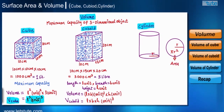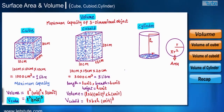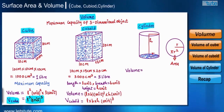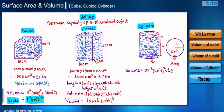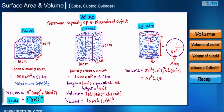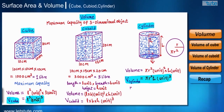If we multiply the area of the circle by the height, we get the volume of a right circular cylinder. Taking radius r units and height h units, the area of the base is π r² unit squared. Multiplying by height h gives the volume of the cylinder as π r² h unit cubed.